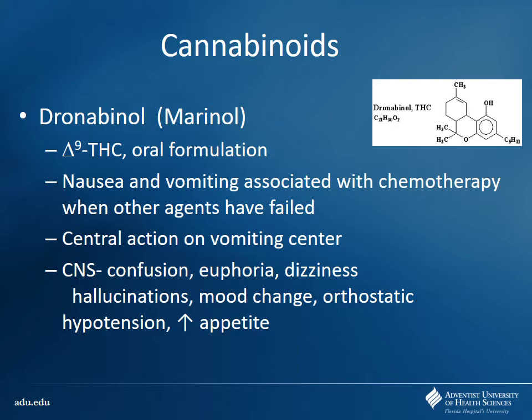Dronabinol is used for chemo-induced nausea and vomiting, and we give it even to kids at Nemours — not for recreational purposes, strictly for nausea, vomiting, and appetite stimulation. A key side effect you'd expect from cannabis is increased appetite. For chemotherapy or HIV patients who are malnourished and losing weight, giving them the 'munchies' can be beneficial — helping them put on weight. Dronabinol is a synthetic form of delta-9-tetrahydrocannabinol, or THC — made in a lab but the same chemical structure.